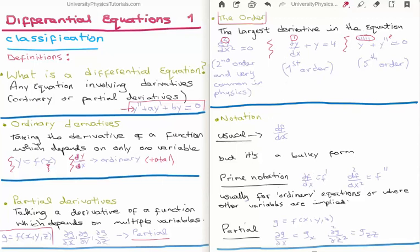There are lots of different ways to write derivatives. The usual notation is df/dx — take the derivative of the function f with respect to x. But sometimes this is a bulky form. Sometimes you'll prefer to use prime notation, where we put a single prime above our function to indicate a single derivative, and two primes meaning a second derivative. This is usually used for ordinary equations with one variable.